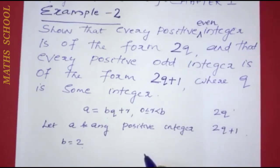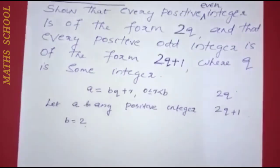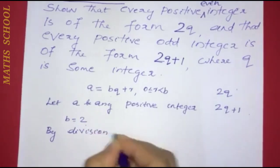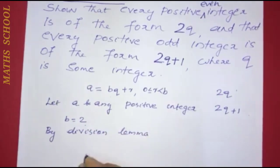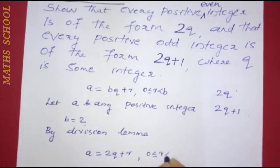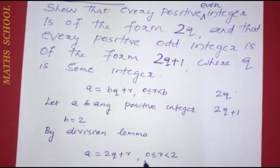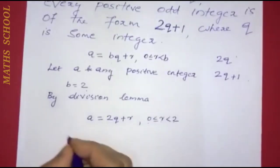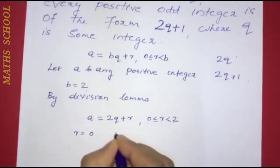We divide a and b using the division lemma. By the division lemma, a equals 2q plus r, where 0 is less than or equal to r, less than b. Since b equals 2, the remainder r is either 0 or 1.